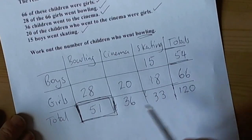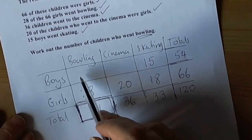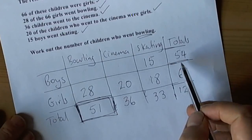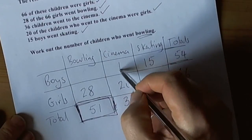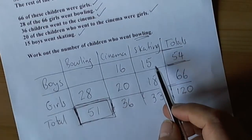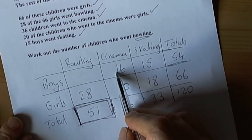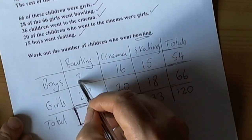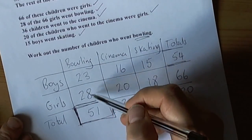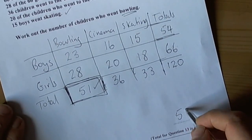So we think the answer is going to be 51. We should do a check though, so let's fill in the rest of the information. 36 take away 20 is 16 for boys cinema. 54 take away 15 take away 18 leaves 21 for boys — wait, working through: boys bowling comes to 23. Adding up the bowling column: 23 plus 28 is 51. Our check worked, so the answer is 51 for bowling.